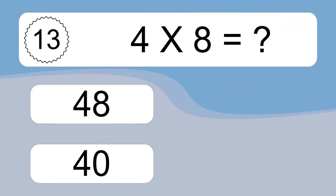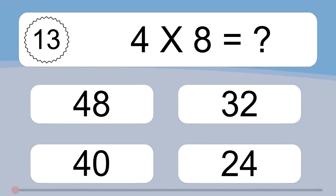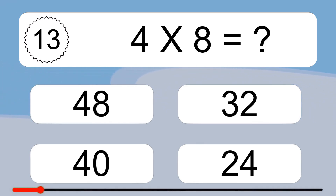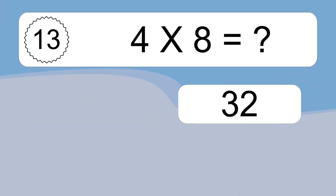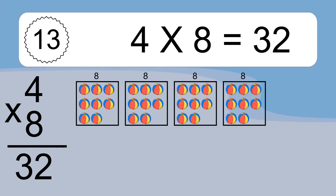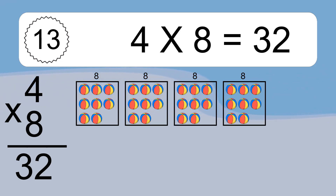Four times eight equals what? Four times eight equals 32. We have four boxes, and each box has eight colorful balls inside. If you count all the balls in all the boxes together, you will have four times eight balls. This equals 32 balls.